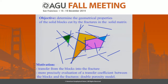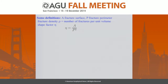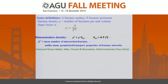Motivation: for instance, in the oil industry, to be able to quantify the transfer from the blocks into the fracture network. Some definitions: A is the fracture surface, P is the fracture perimeter, rho is the number of fractures per unit volume. There is a shape factor eta, which is A over P squared. And there is the dimensionless density — the mean number of intersections per fracture — which is proportional to the fracture density and quite useful to rationalize the properties of this medium.